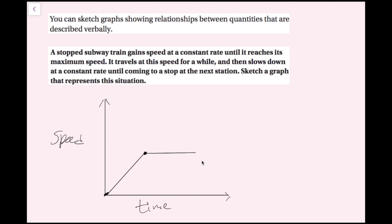This might not be perfectly horizontal but that's okay — we're just sketching. Then it slows down at a constant rate until it comes to a stop, so it's going to be a line segment going back down to zero, because a constant rate of change means a linear relationship. Something like this can describe this situation.